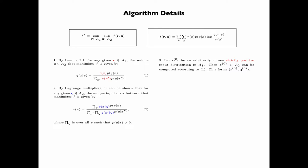Let R0 be an arbitrarily chosen strictly positive input distribution in A1. Then Q0 in A2 can be computed according to equation 1. This forms the pair R0, Q0. Then compute R1, Q1, R2, Q2 iteratively by applying equation 2 and equation 1 alternately.